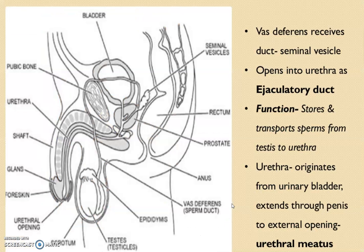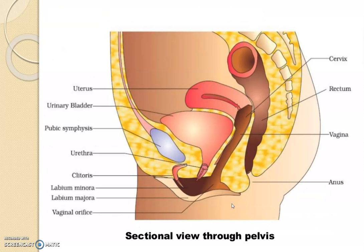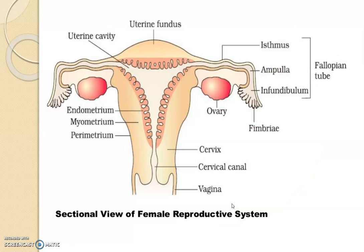The female reproductive system consists of a pair of ovaries, a pair of oviducts, a uterus, cervix, vagina, external genitalia, and a pair of mammary glands for the nourishment of young ones. All parts are integrated structurally and functionally to support the processes of ovulation, fertilization, pregnancy, birth, and child care.